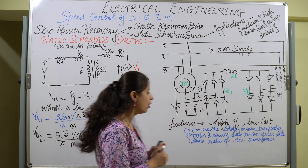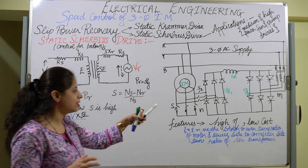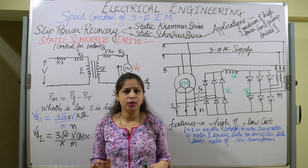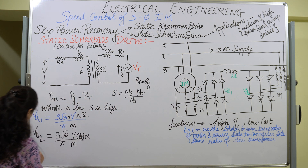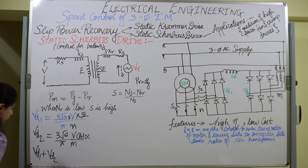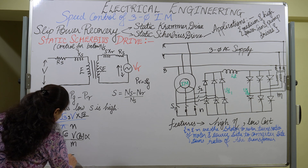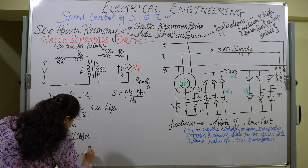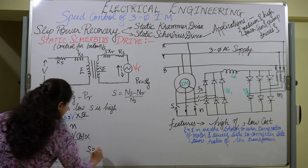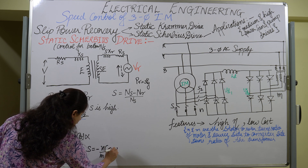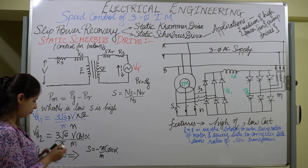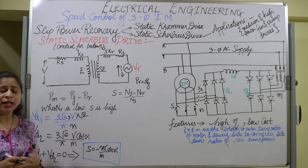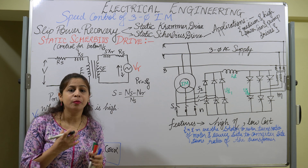If we consider the losses to be negligible — since the inductor removes all ripple current — we can write VD1 + VD2 = 0. Solving this equation gives us the slip: S = -(N/M) · cos α, where α is the firing angle at which the inverter thyristors are triggered.